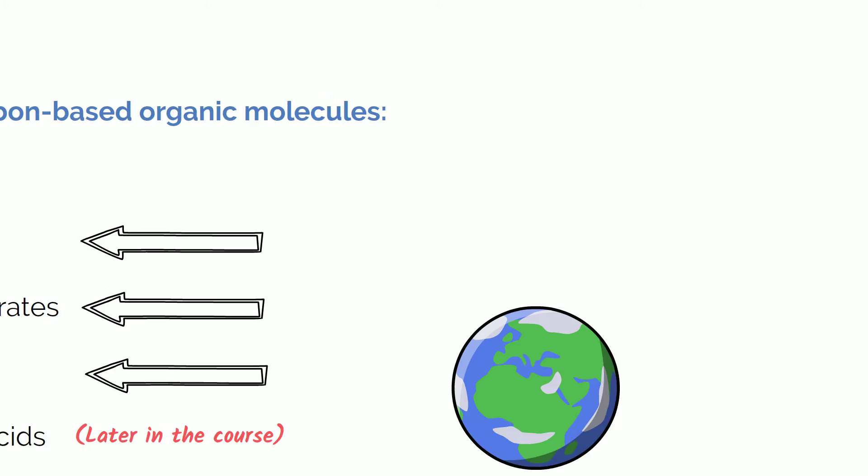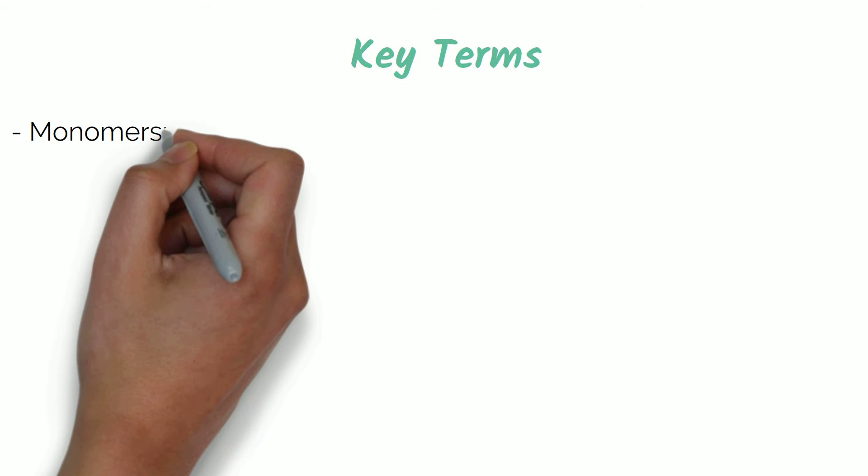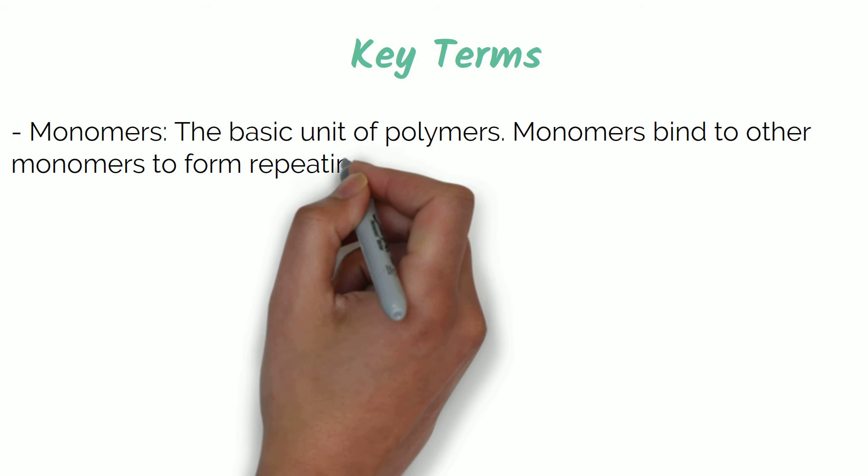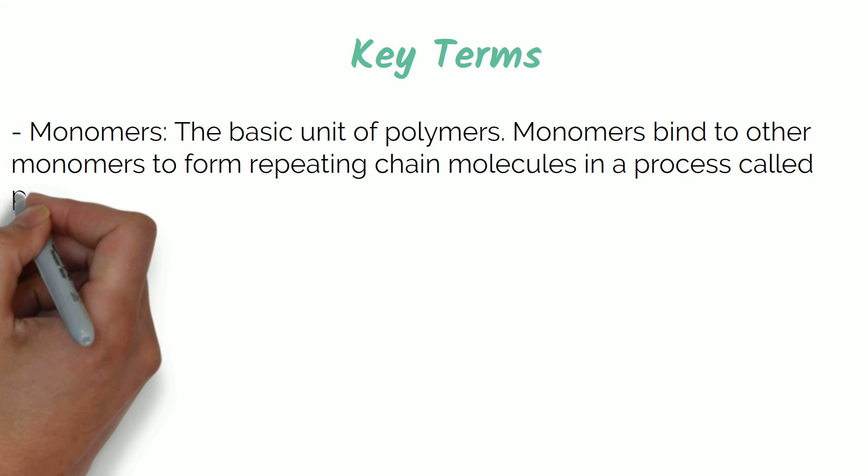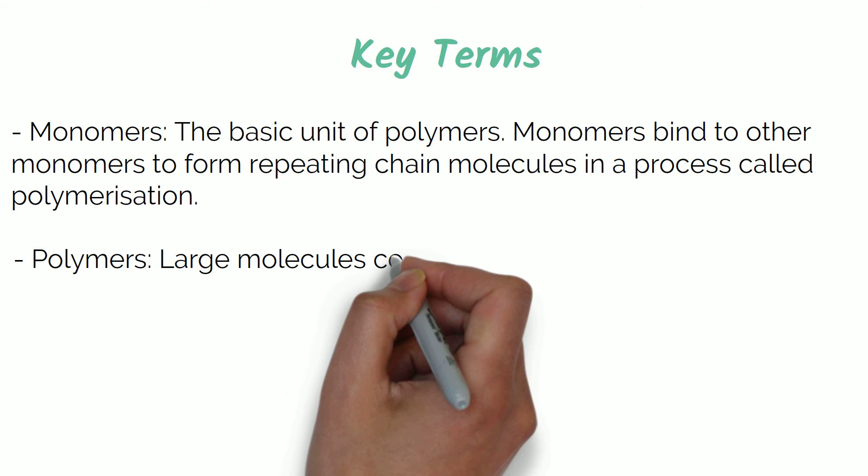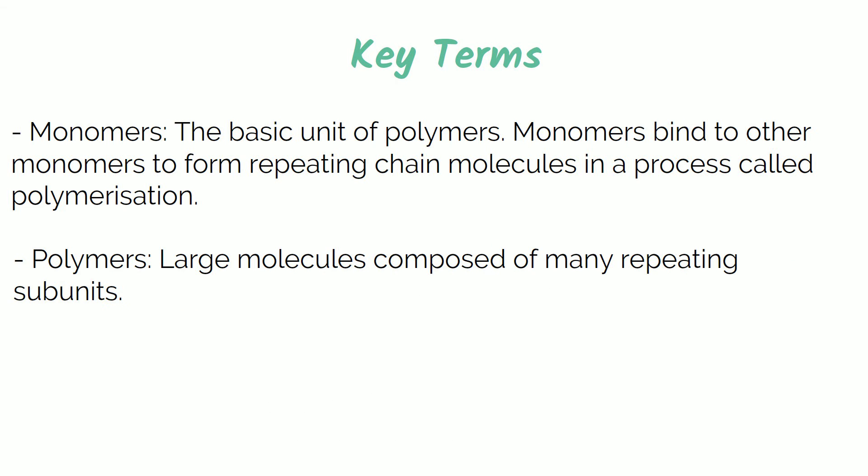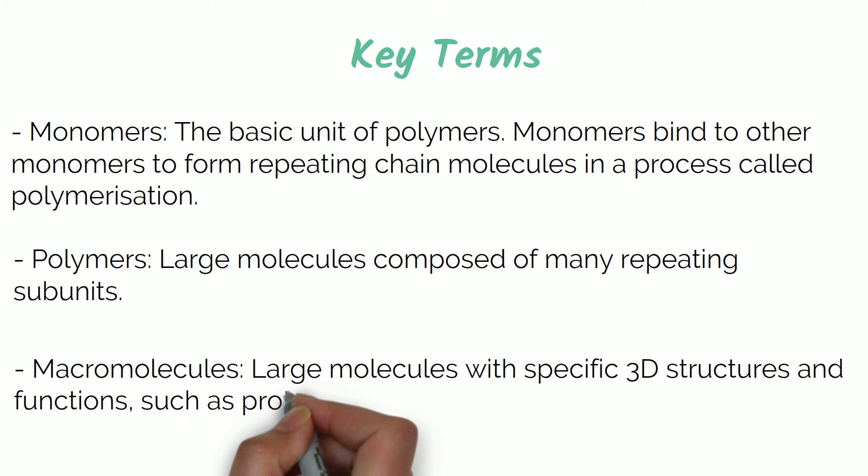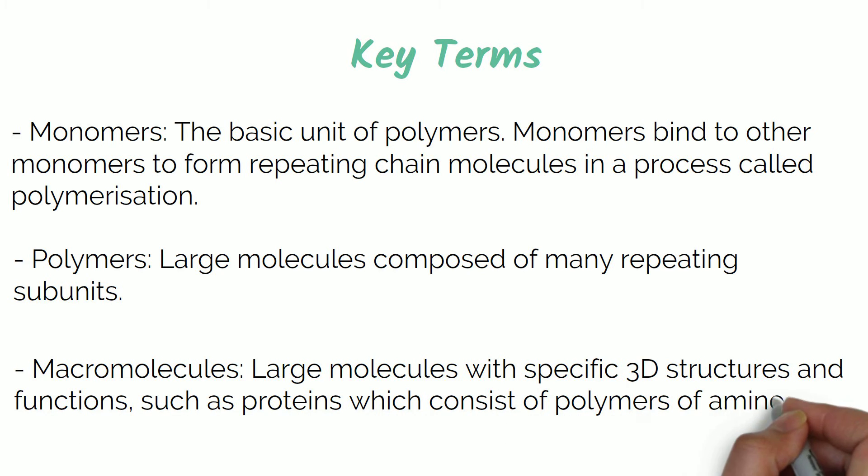Key terms we will cover in the discussion of biological molecules are monomers, the basic unit of a polymer. Monomers bind to other monomers to form repeating chain molecules in a process called polymerization. Polymers are large molecules composed of many repeating subunits and macromolecules which are large molecules with specific 3D structures and functions such as proteins which consist of polymers of amino acids.